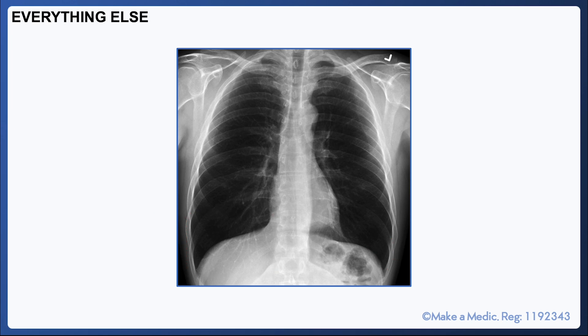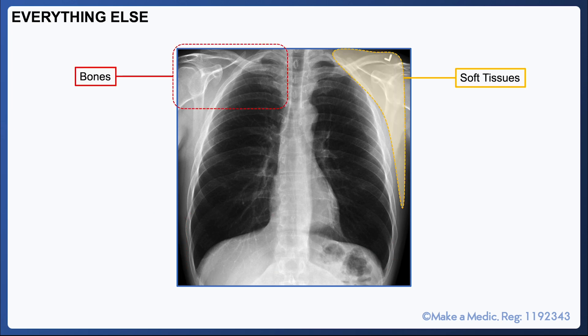As for everything else, it's important to look at the bones, the soft tissues, and for any foreign bodies. Abnormalities that you may note during this part of interpreting an x-ray include fractures, subcutaneous emphysema, and aspirated foreign bodies.